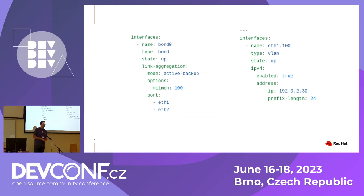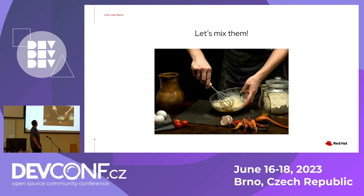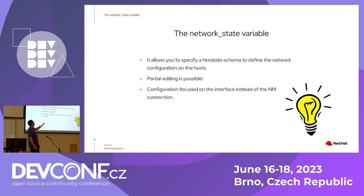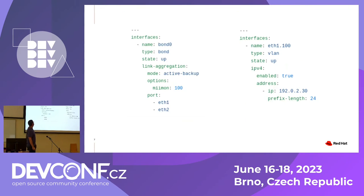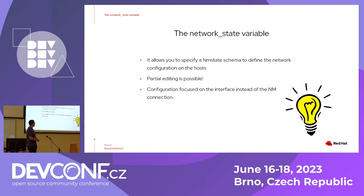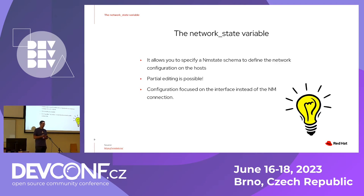Currently, NMState by itself can only be used on your host. And we wanted to have a tool that can use NMState across multiple hosts at the same time — and then we thought of the network role. So we introduced the network_state variable. When using the NM provider, I mentioned before the network_connections variable, and now we are going to have something different: the network_state variable. The user will define the complete network state that wants to be applied using the NMState schema. So if the user is already familiar with the NMState API, they don't need to learn something new — they can use the same schema and apply it.